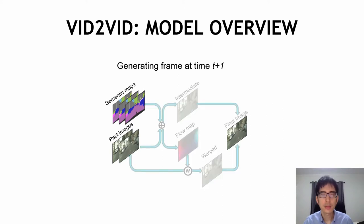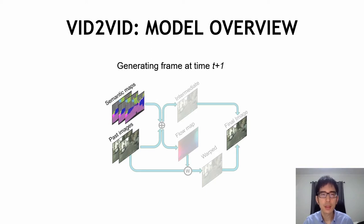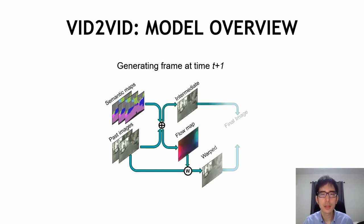When generating the next frame at time t+1, we take the new semantic map at time t+1, and the previously generated image now becomes input to the generator to generate this new image, and so on and so forth. This generator sequentially generates all the frames in the video.